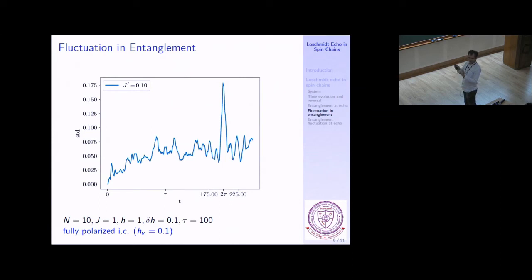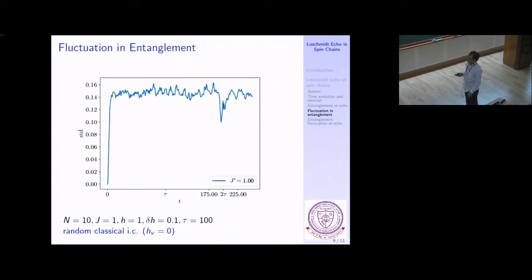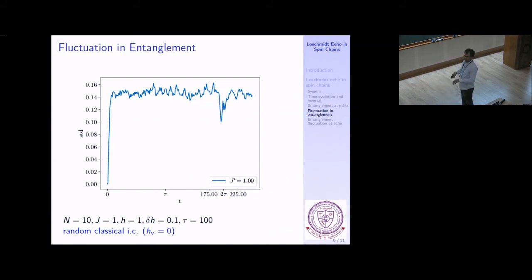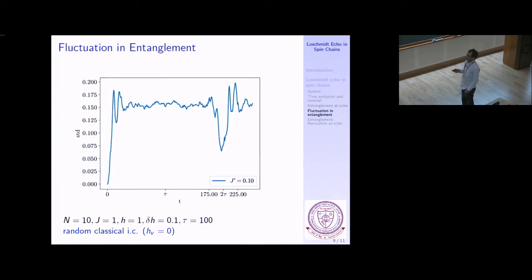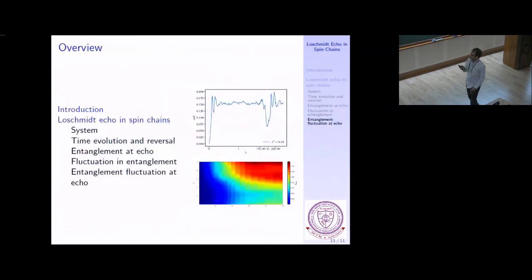So far all results use a fully polarized initial condition with all spins pointing up. We now check the effect of initial condition by using a random classical initial condition: we switch off the transverse field, take an eigenstate of the classical Ising model, so at every site the S_z value is either +1 or -1. Looking at the entanglement fluctuation, it starts at zero, reaches a finite value, and still shows a measurable dip near t=2τ, which is more dramatic for small j-prime — closer to integrability.